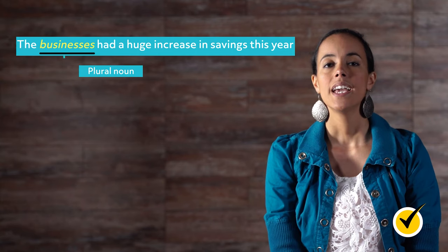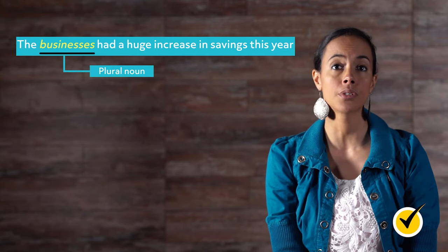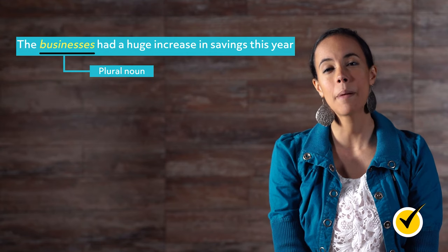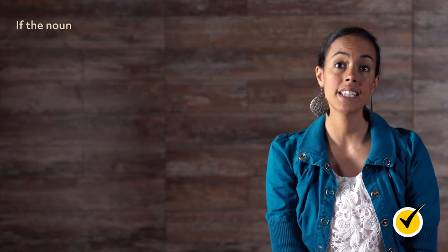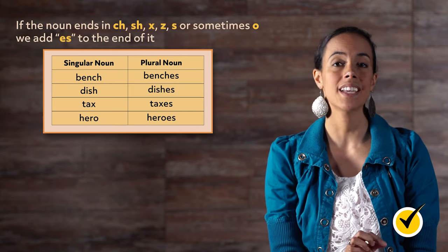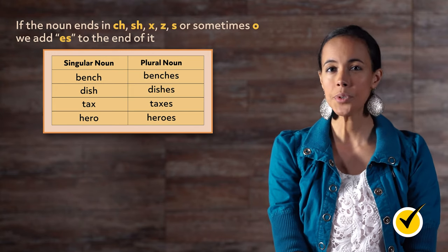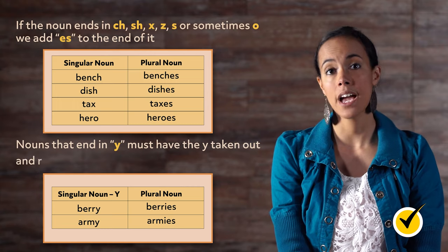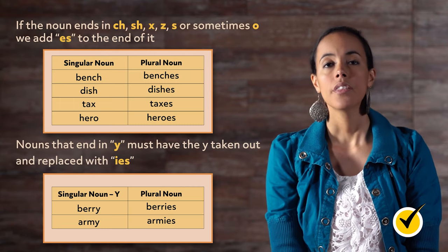Here's one more example: The businesses had a huge increase in savings this year. Businesses is the plural noun because it describes more than one business — we made it plural by adding ES. Remember, when making a singular noun plural, if the noun ends in CH, SH, X, Z, S, or sometimes O, we add ES to the end. Nouns that end in Y must have the Y taken out and replaced with IES. There are always some exceptions, but the way you make a singular noun plural depends on what letter the word ends with.